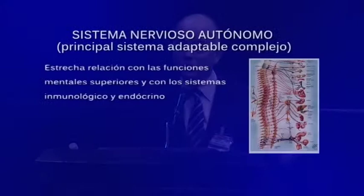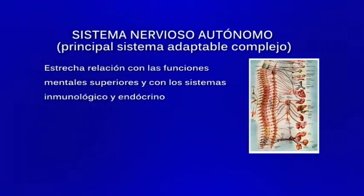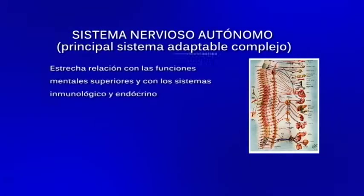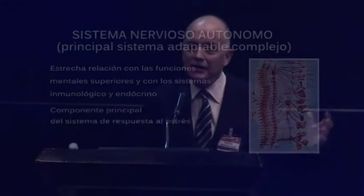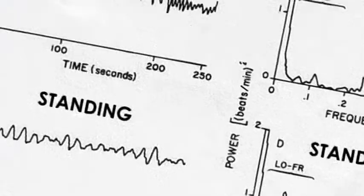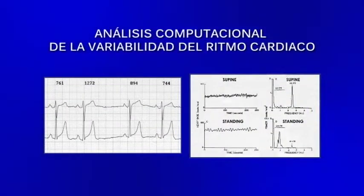Igual sucede con el sistema inmunológico y el endócrino, que son los otros sistemas adaptables complejos mayores. El sistema nervioso autónomo es el componente principal del sistema de respuesta al estrés, y no podía ser estudiado con métodos lineales, como es la medición de catecolaminas en la orina, porque es un sistema tan dinámico que está cambiando constantemente su actividad en todo el cuerpo. Pero hay un nuevo método basado en computadoras: el análisis de la variabilidad del ritmo del corazón, que se basa en el hecho de que los latidos del corazón no son fijos.